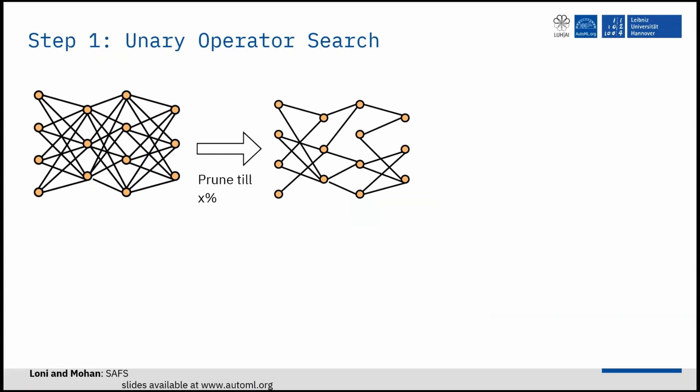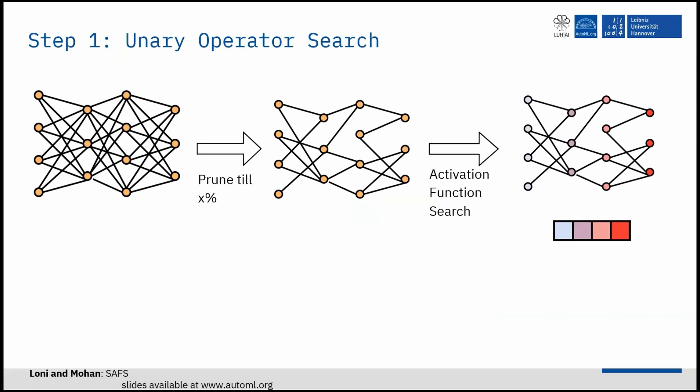To solve the search problem, we propose a novel two-stage search method. The first step is to find a unique unary operator for each layer of the network. For this aim, we leverage the late acceptance hill climbing algorithm as a semi-local search method.